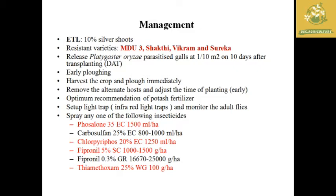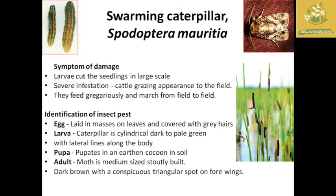Management of gall midge: grow resistant varieties; release biological parasitoids like Platygaster sp. at 1 per 10 square meters, 10 days after transplanting; harvest the crop and plow immediately; early plowing also reduces gall midge populations; set up light traps with infrared/red light to monitor adult flies. Chemical insecticides can also be used.